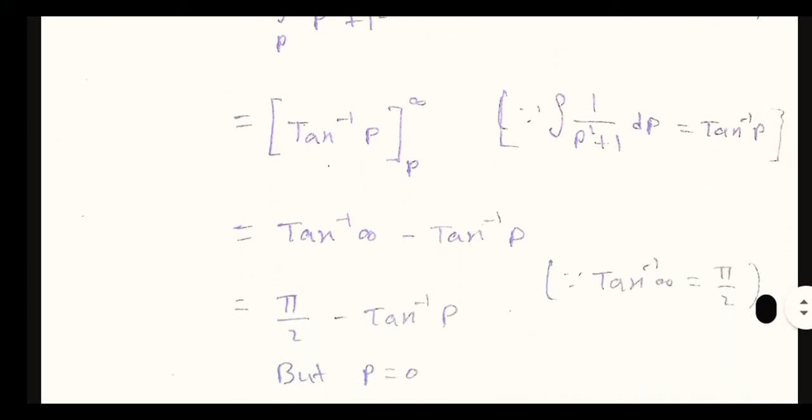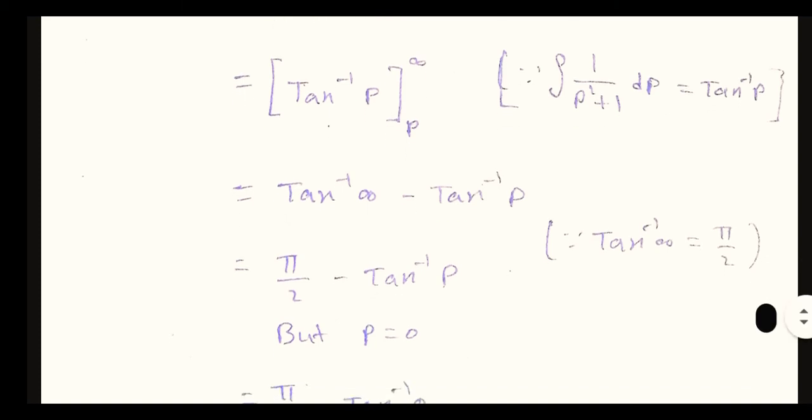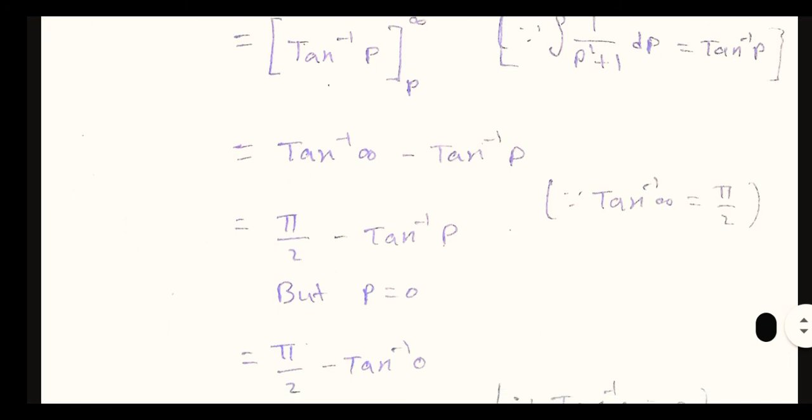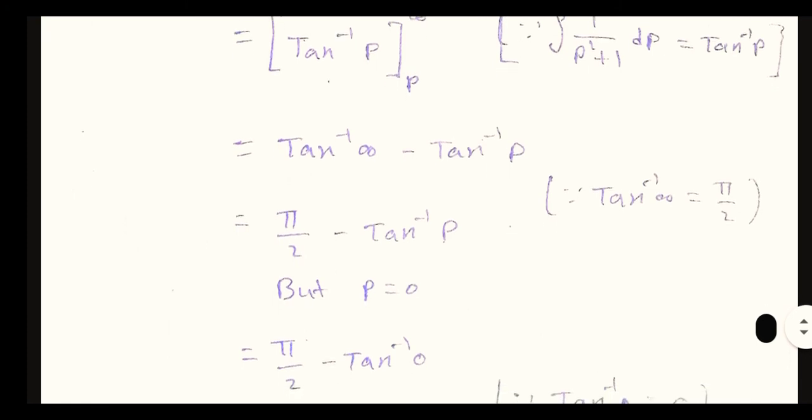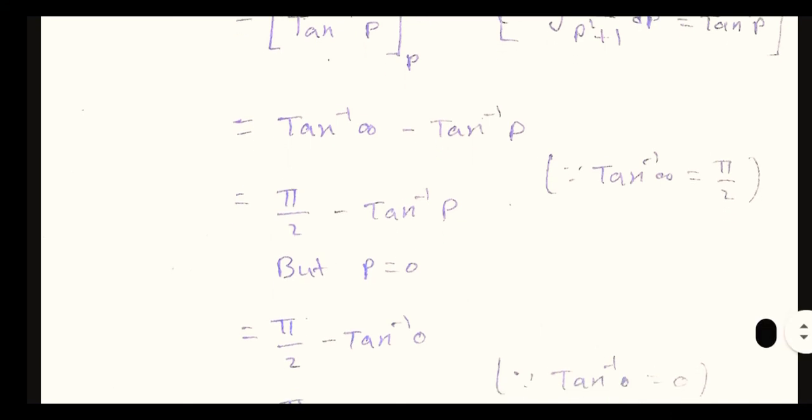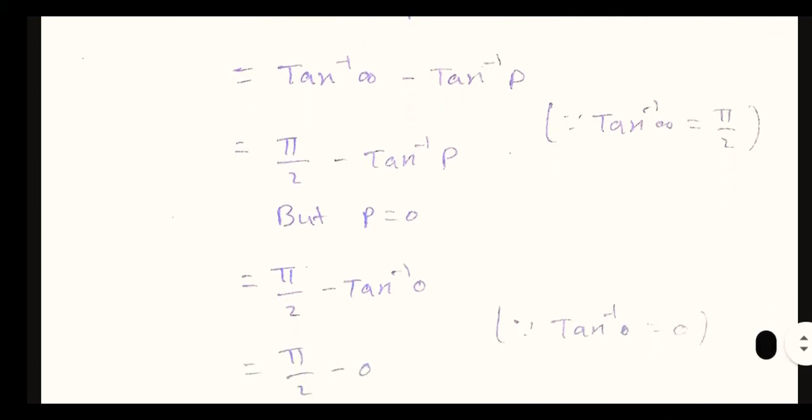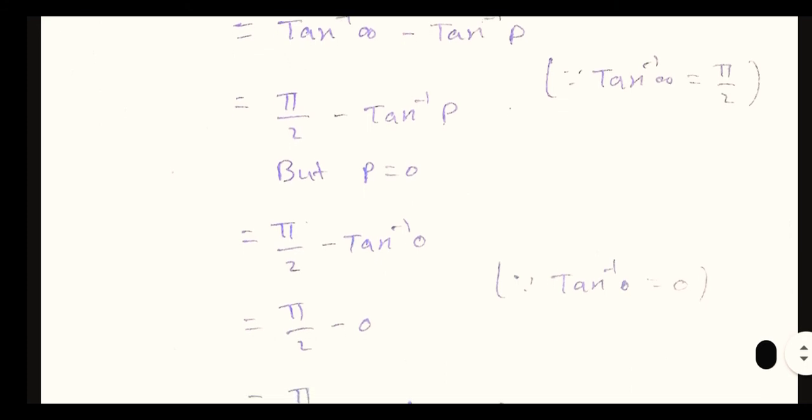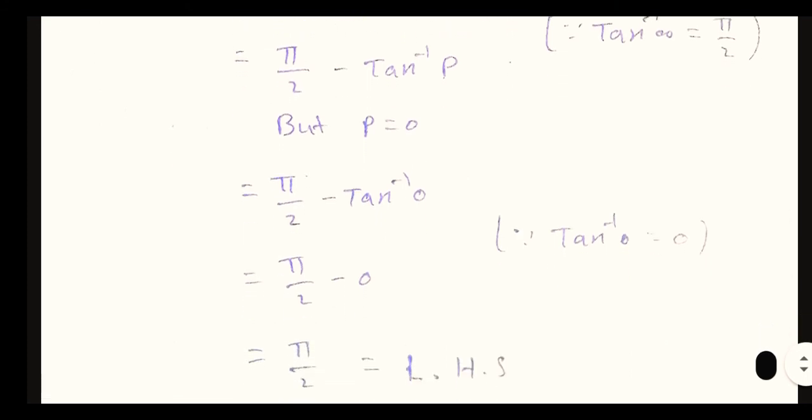At infinity, tan inverse infinity equals pi by 2. Lower limit p gives tan inverse p. So pi by 2 minus tan inverse p. As p approaches 0, tan inverse 0 equals 0, leaving pi by 2, which equals LHS. Therefore the result is pi by 2.